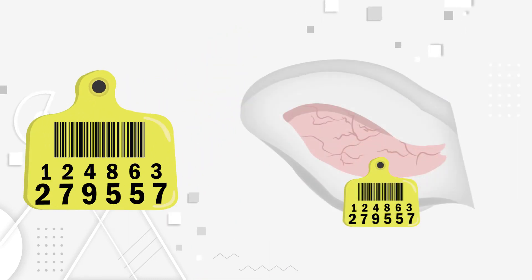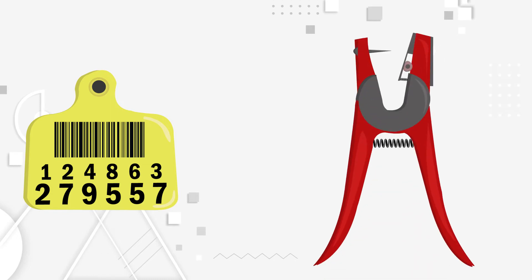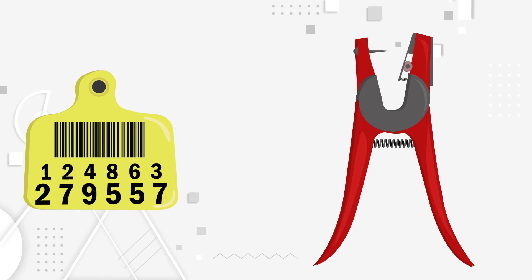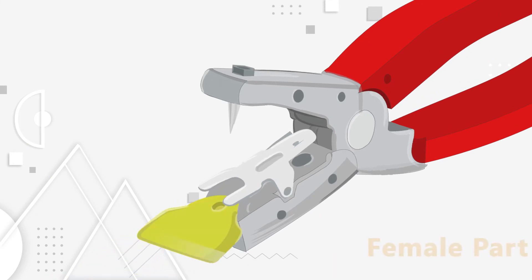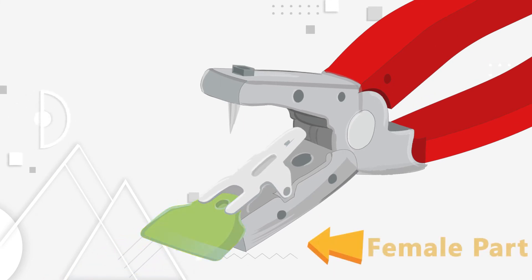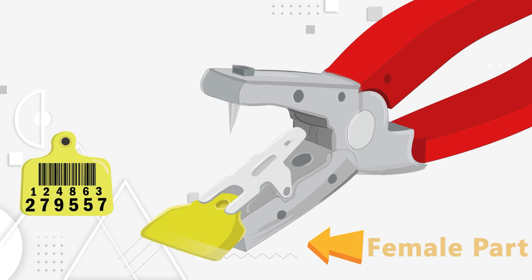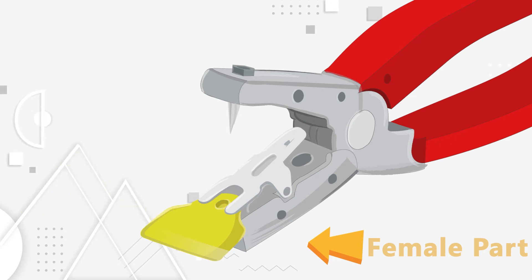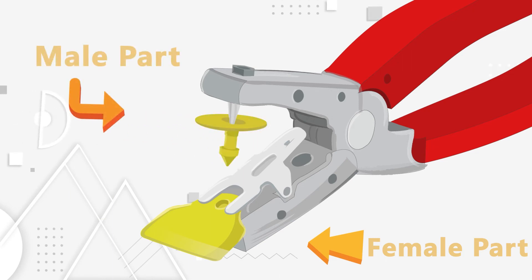A tag applicator should be used to ensure the correct size and type of tag is applied. Use the tag applicator machine very carefully, as it is sharp and can cause harm to the animal and the individual holding it. Press the lever to place the tag or UID. There is a knot where the UID is printed, and the applicator should be used such that the knot comes out correctly. If done properly, misuse of tagging can be prevented.